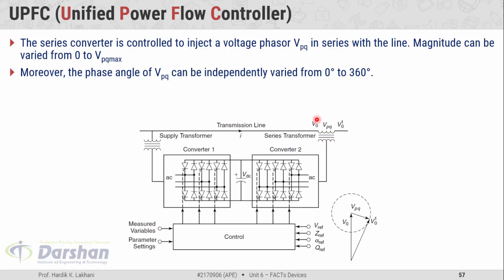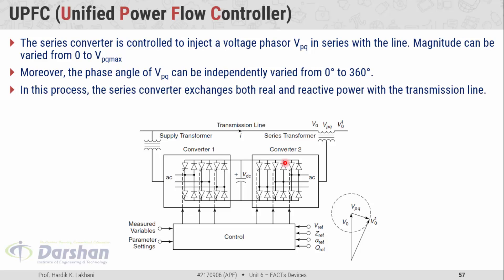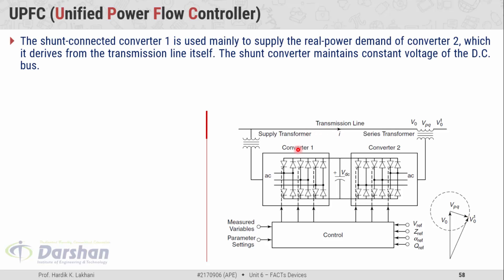The phase angle of VPQ can be independently varied from 0 to 360 degrees by appropriate control action taken over converter 2. In this process, the series converter exchanges both real and reactive power with the transmission line. The shunt connected converter, which is converter 1, is mainly used to supply the real power demand of converter 2. Whatever active power is demanded by converter 2, that demand is fulfilled by converter 1. Converter 1 takes the active power from the transmission line and provides the appropriate magnitude to converter 2. The shunt converter maintains the constant voltage of the DC bus.